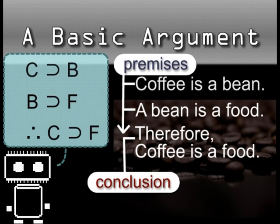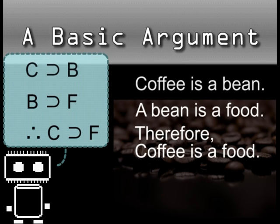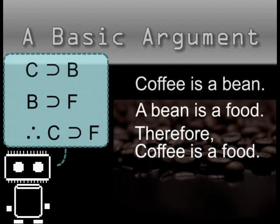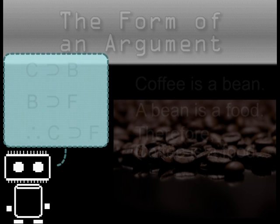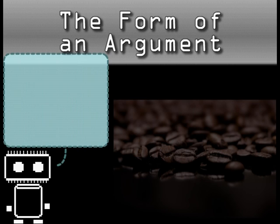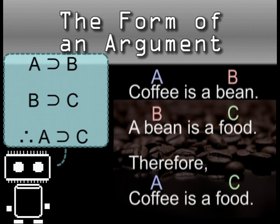Hold your criticism for now and consider the structure of my argument first. Is the form of my argument any good? Let's abstract the argument to: A is B, B is C, therefore A is C.